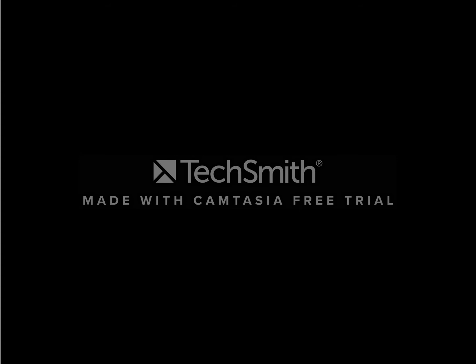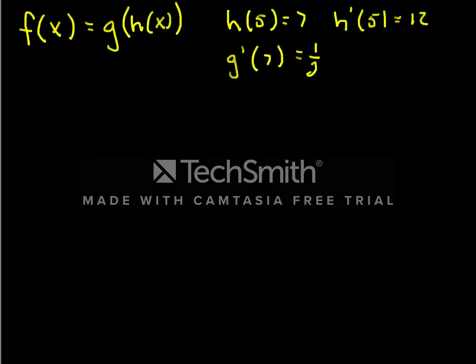So let's say that f(x) is a composition of two functions. f(x) is equal to maybe g(h(x)). And we know some information about it. We know that h(5) = 7, we know that h'(5) = 12, and we know that g'(7) = 1/2. So this is information we know somehow. We've gathered it from data or it's just been given to us.